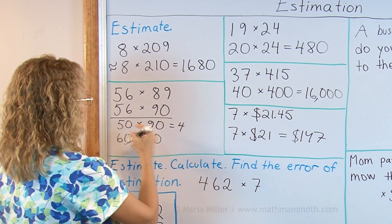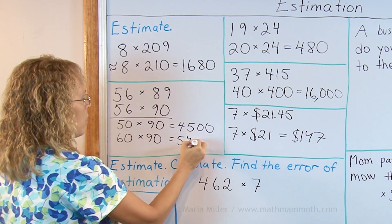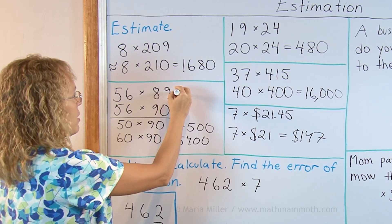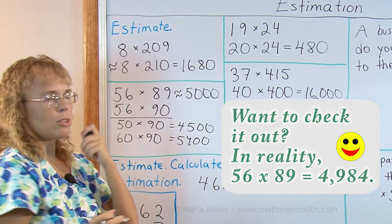Let me find a number in the middle and that would be a pretty good estimation for 56 times 90. This is 45 and two zeros and then this is 54 and two zeros. So let me choose just a number there in the middle about 5000 right? And I think that's a pretty good estimation for this original one.